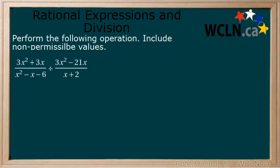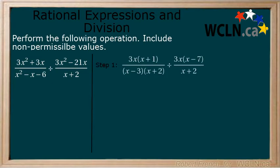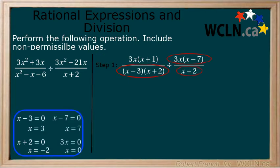Perform the following operation and include non-permissible values with your final expression. Step 1: Factor the numerator and denominator in each expression and determine non-permissible values. The non-permissible values come from the denominator in the first expression and the numerator and denominator in the second. This is because you can't divide by zero and we are dividing by the second expression.